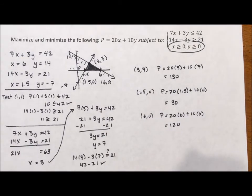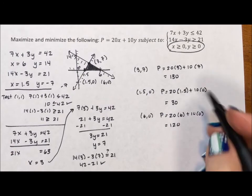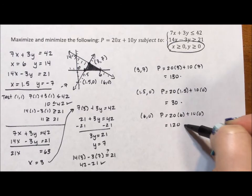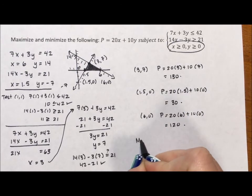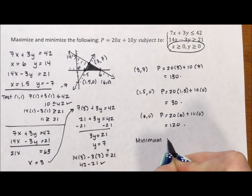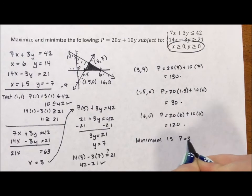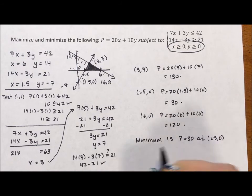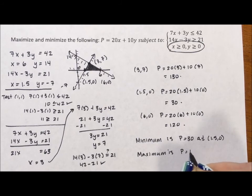Okay, so sometimes you're looking for the minimum, sometimes you're looking for the maximum, this time I'm looking for both. So if I look at my final answers, the minimum is p equals 30 at (1.5, 0). The maximum is p equals 130 at (3, 7).